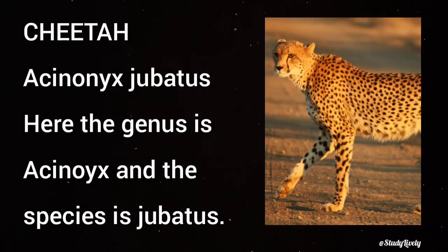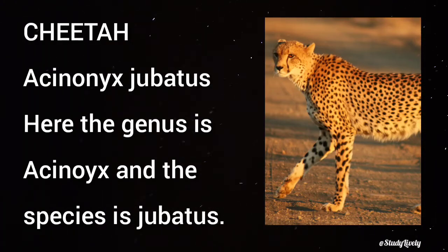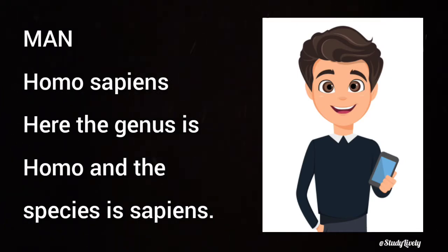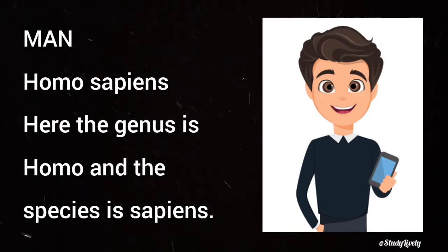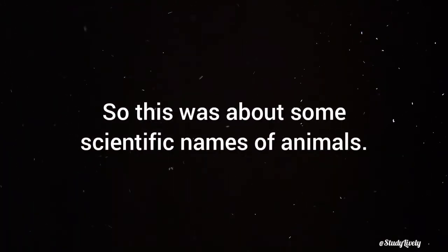Cheetah — Acinonyx Jubitus. Here the genus is Acinoics and the species is Jubitus. Man — Homo Sapiens. Here the genus is Homo and the species is Sapiens. So this was about some scientific names of animals.